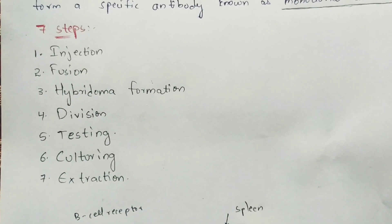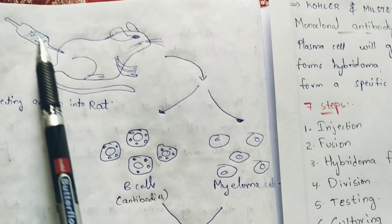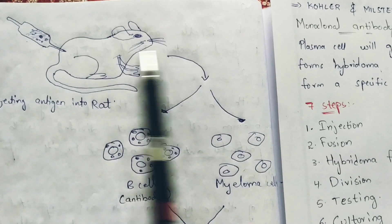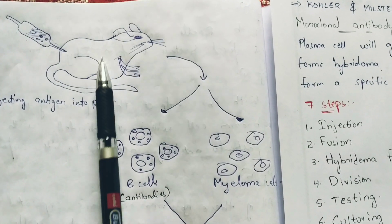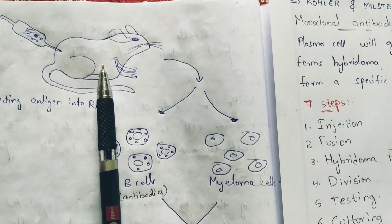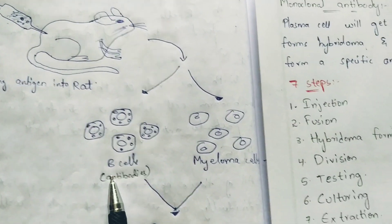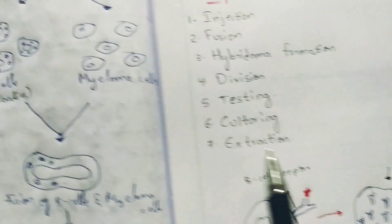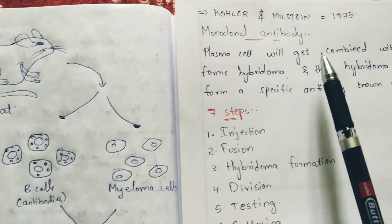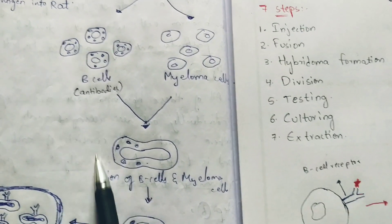Coming to the first step — injection. Here I am taking the example of a rat. When the antigens will get injected into the organism, the immune system present in the rat will get activated. Due to the activation of the immune system, releasing of B cells takes place. These B cells get released from the spleen. These B cells will consist of antibodies and normally these B cells will get combined with the myeloma cells.